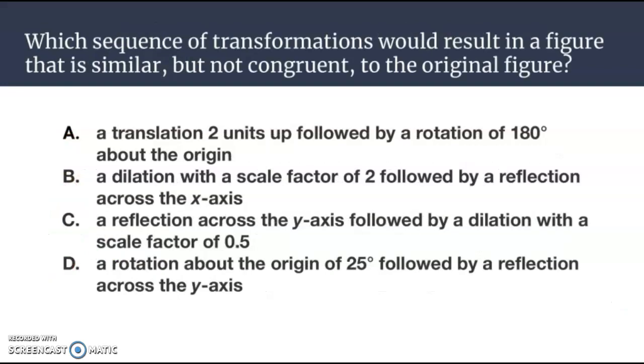Let's look at another one here. Which sequence of transformations will result in a figure that is similar but not congruent to the original figure? Again, we are going to look for the dilation and looking at the two examples here. Look at B. Dilation with a scale factor of 2. C. They reflected across the y-axis, then they dilated by a scale factor of 0.5.